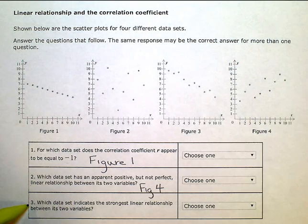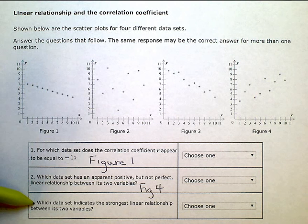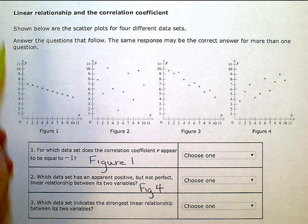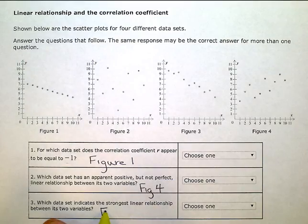Which data set indicates the strongest linear relationship between its two variables? This one has the strongest linear relationship. Because it doesn't say positive or negative. Could be either. But the data points fall into the most perfect line. So again, we have figure 1 as our answer.